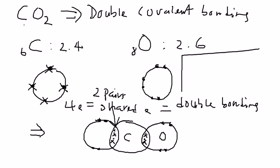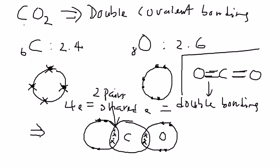If you want to draw the structural formula, you draw one carbon surrounded by two oxygen atoms. You can see two lines between each carbon and oxygen — these two lines represent double bonding.